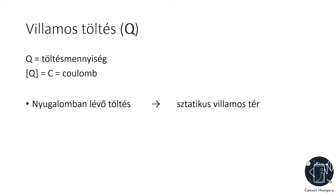A villamostér a villamostöltés következménye. Amennyiben a töltés nyugalomban van, statikus villamosteret hoz létre, ha pedig a töltés mozog, akkor váltakozó villamosteret hoz létre.